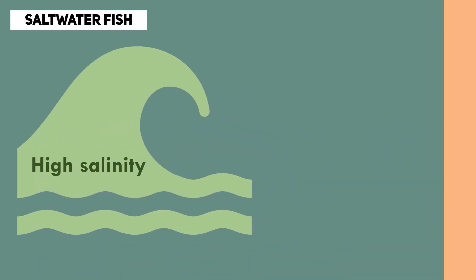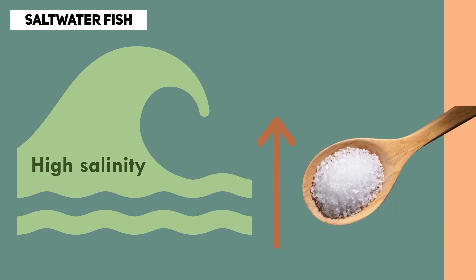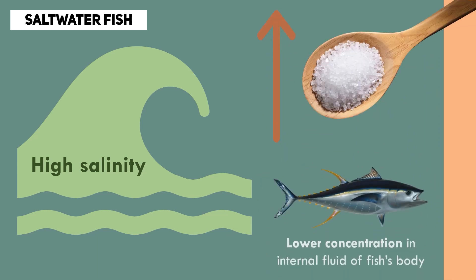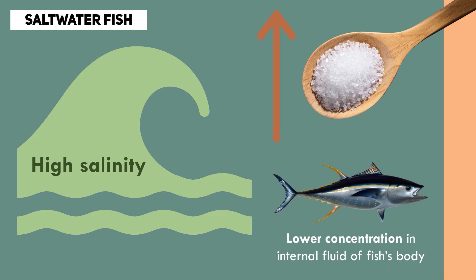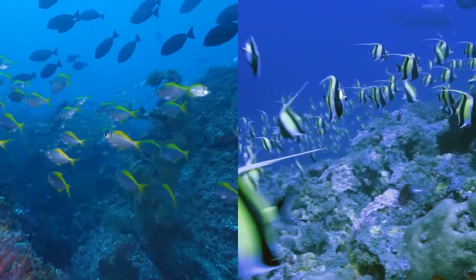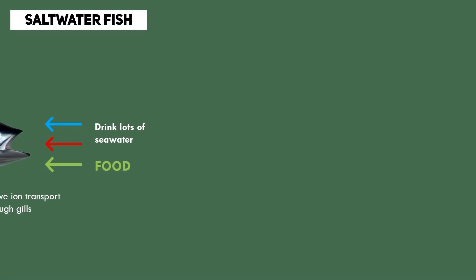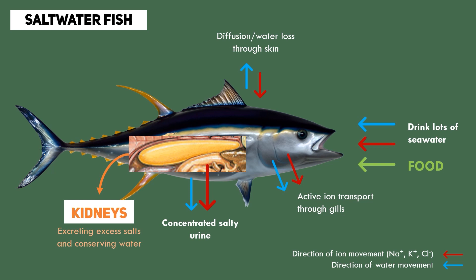Saltwater fish, also known as marine fish, have evolved to live in a high salinity environment. The water in the ocean contains a higher concentration of salt compared to the internal fluids of the fish body. To maintain the proper balance of salt and water in their bodies, saltwater fish have specialized adaptations. They have kidneys that are efficient at conserving water and extracting excess salts. They also have special chloride cells in their gills that actively pump out excess salts from their bodies. In addition, saltwater fish drink large amounts of water to compensate for water loss through their gills due to osmosis.